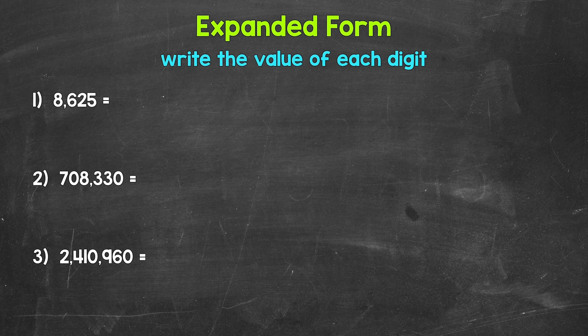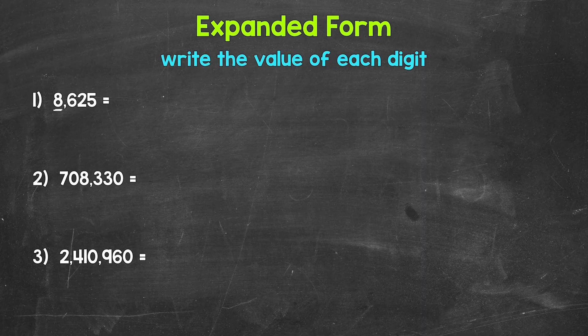You may even hear expanded notation referred to as expanded form — just a different way of doing expanded form. Let's jump into our examples, starting with number one, where we have 8,625. To start writing a number in expanded form, we start with the digit furthest to the left, and then we work our way right. So for number one, we start with this 8 right here.